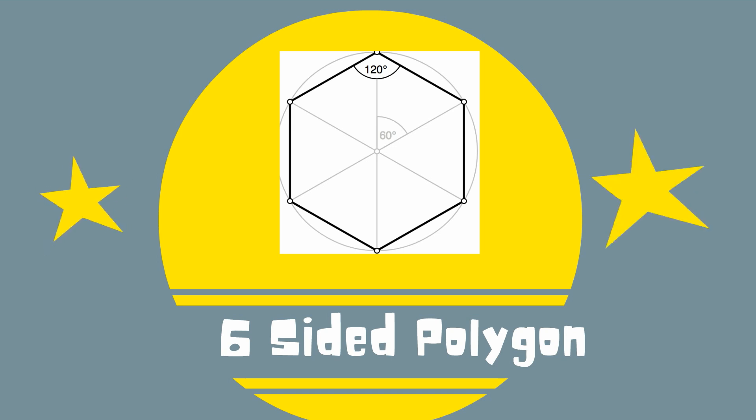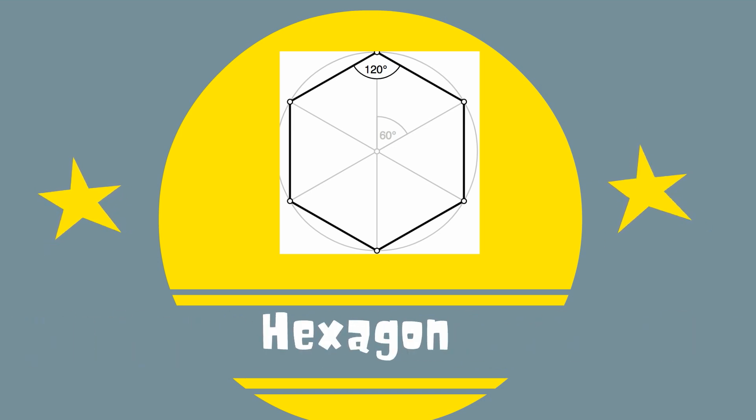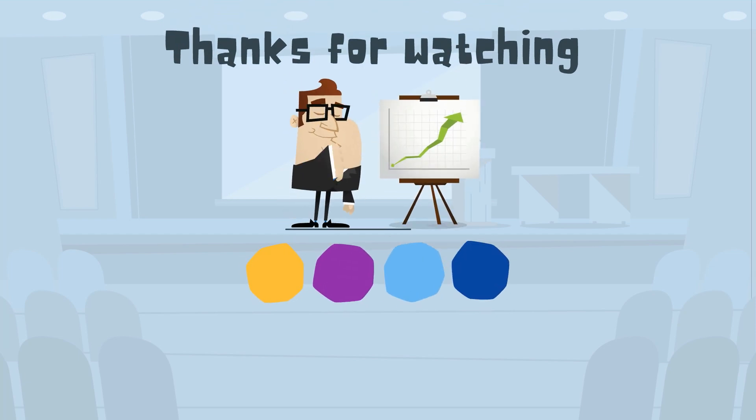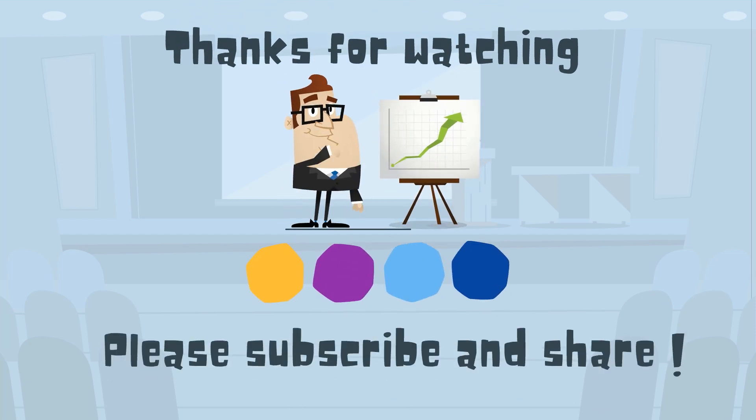So there we go, a six sided polygon called a hexagon. Thanks for watching and MooMoo Math uploads a new math and science video every day. Please subscribe and share.